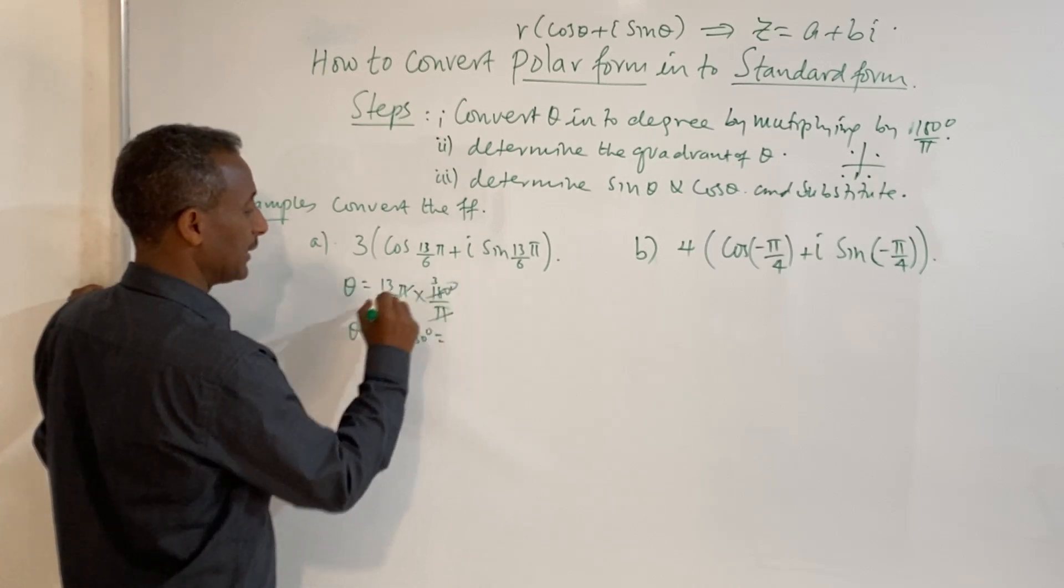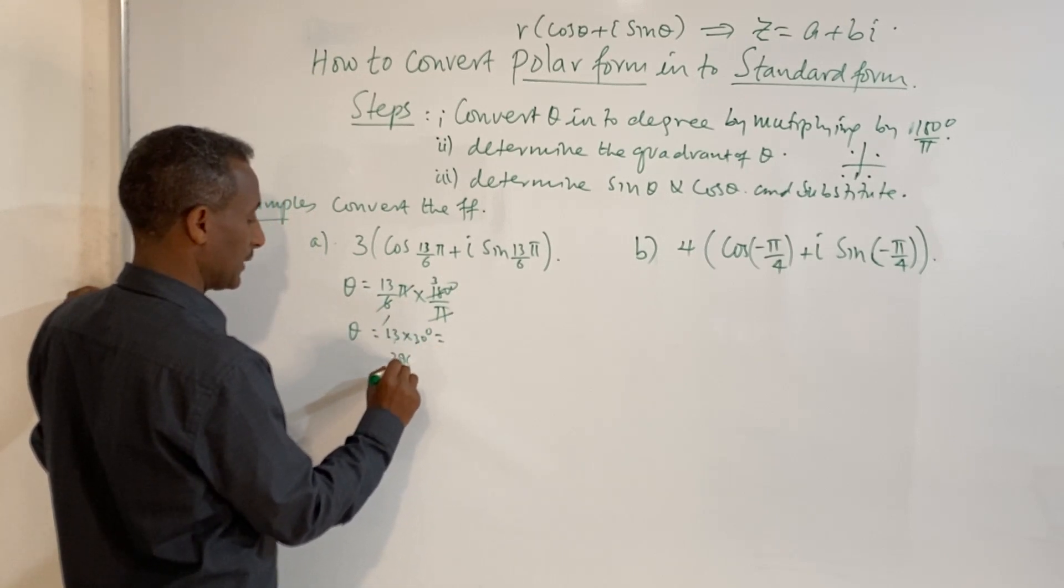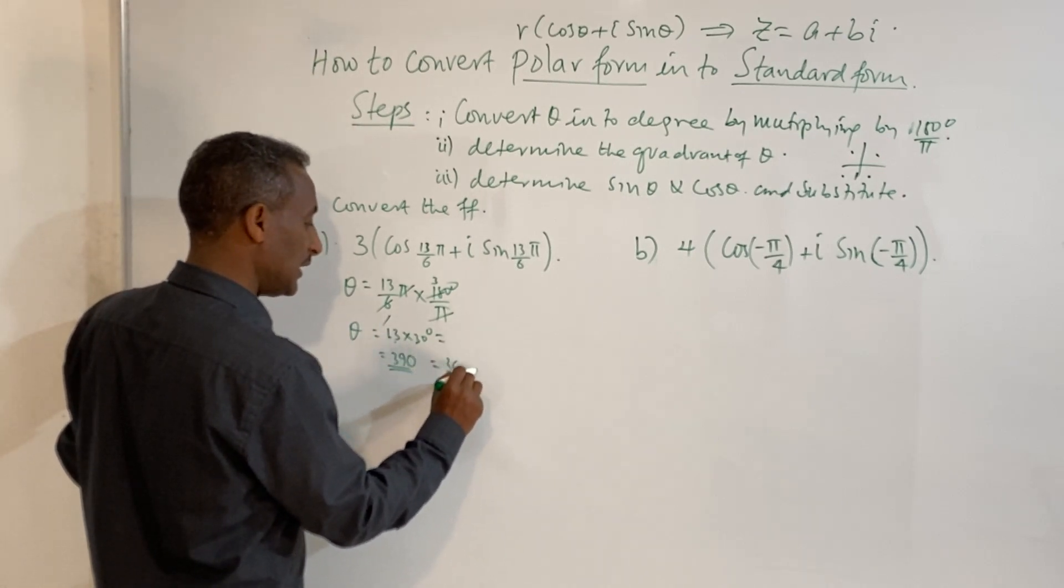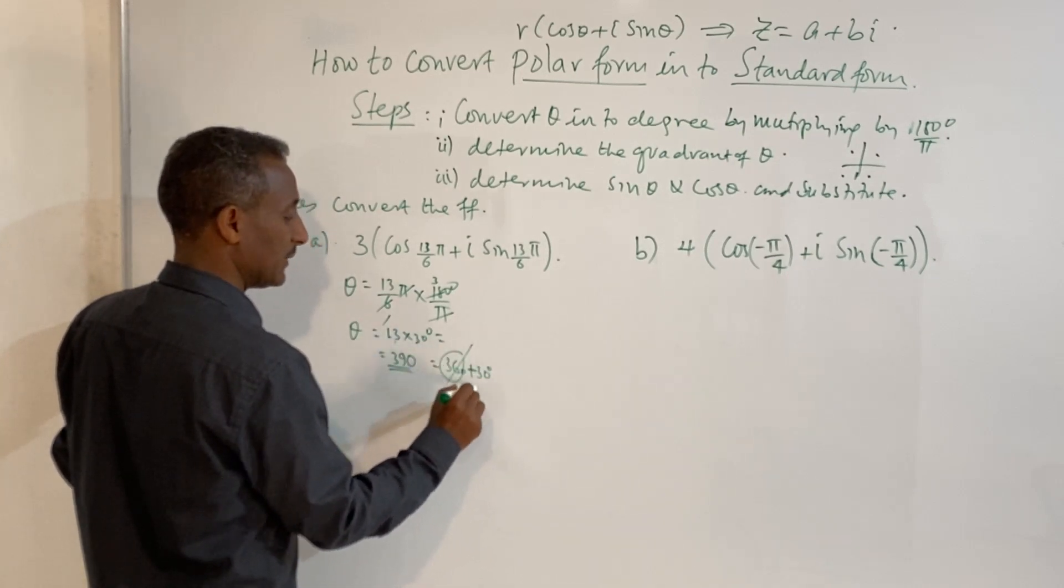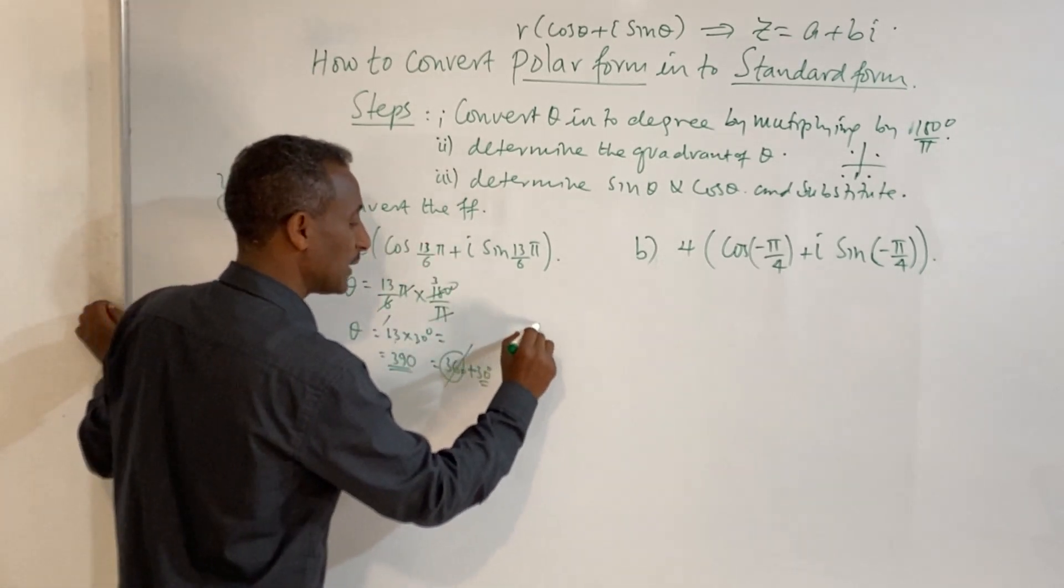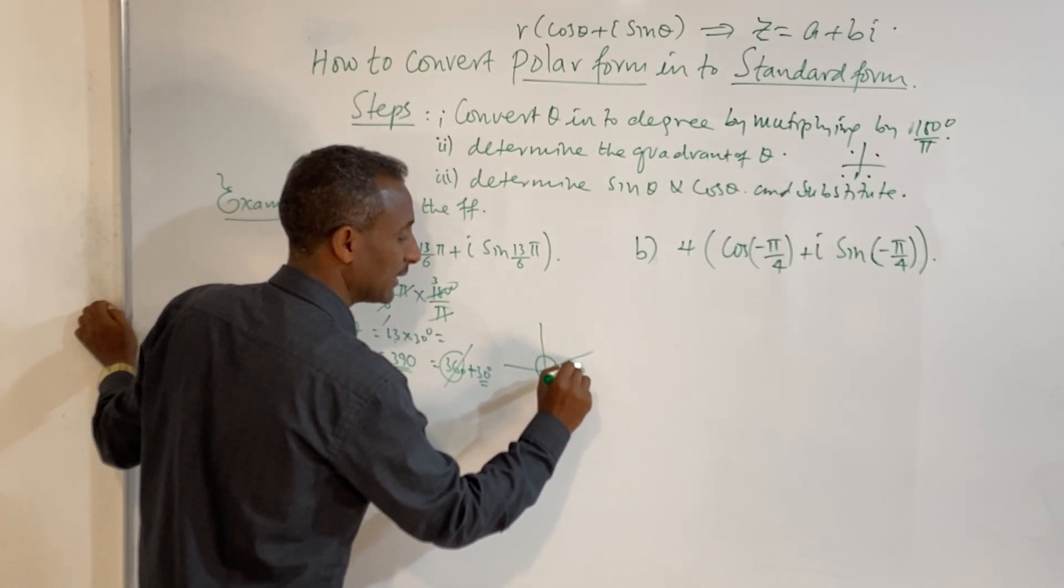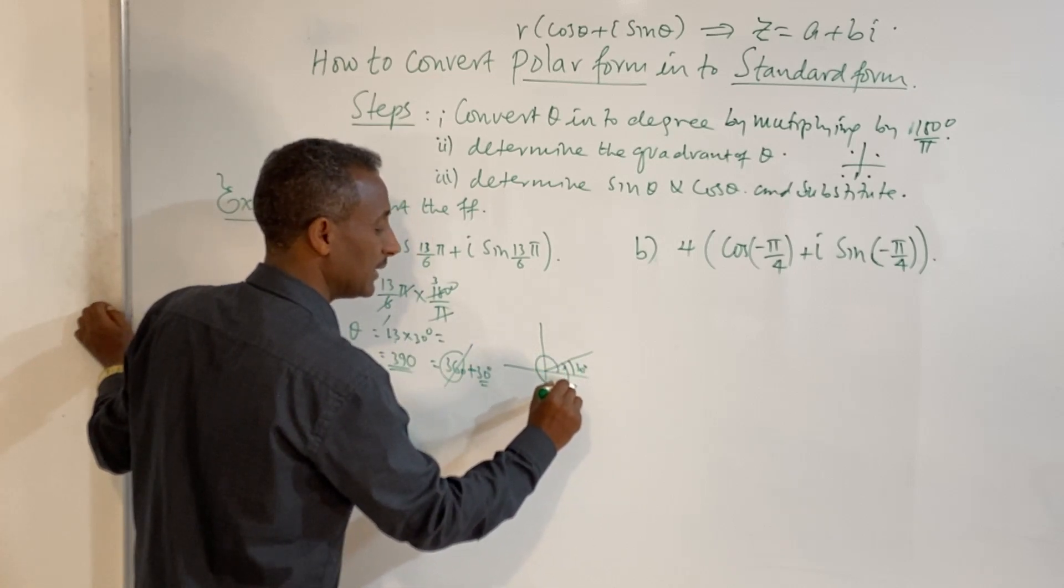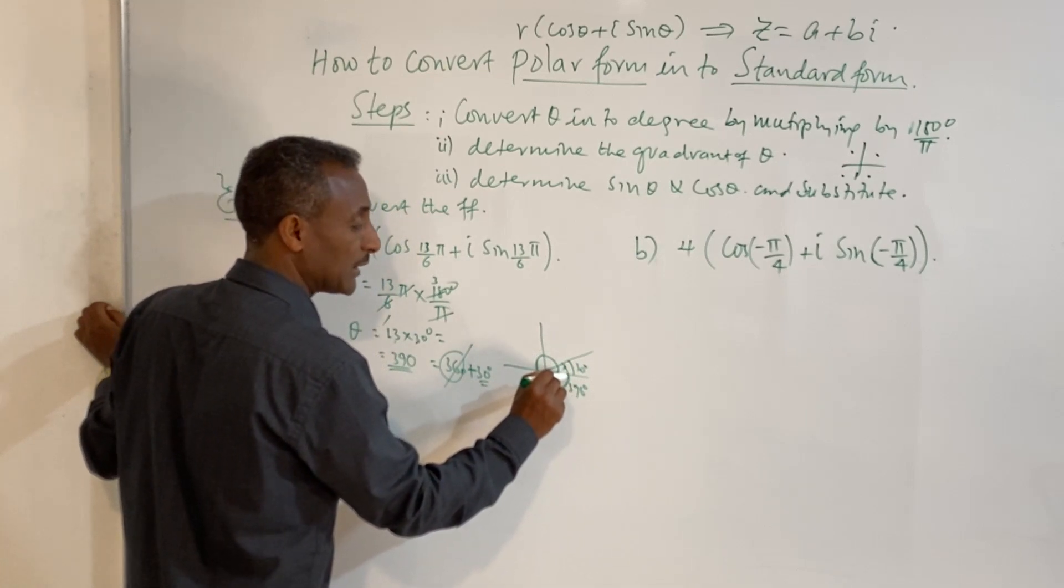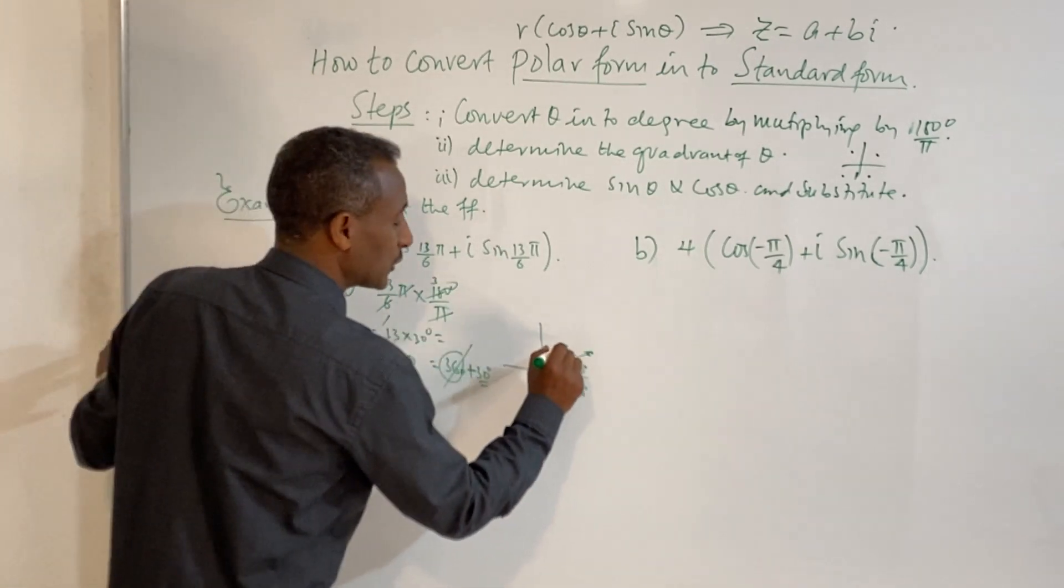Theta equals 390 degrees, which is 360 plus 30. 390 degrees is equivalent to 30 degrees, which is in the first quadrant. This is the reference angle.